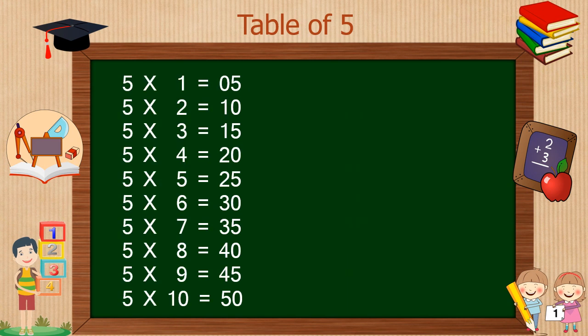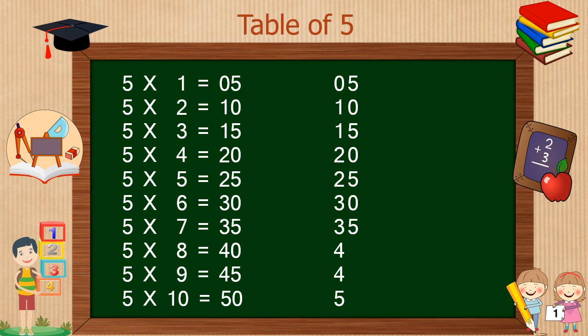For the table of 5, here is a very simple trick. Just write down 0, 1, 1, 2, 2, 3, 3, 4, 4, 5 in the left column. The right side column follows the pattern: 5, 0, 5, 0, 5, 0, 5, 0, 5, 0. Our table of 5 is ready.